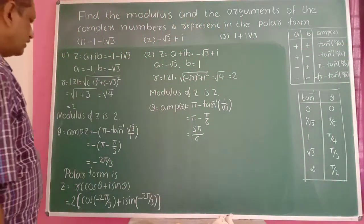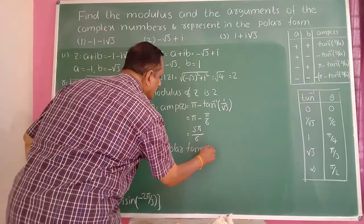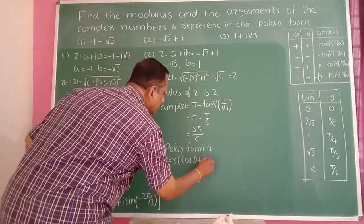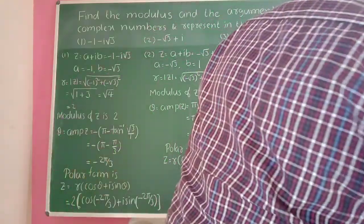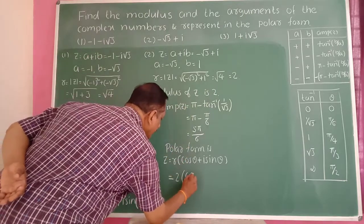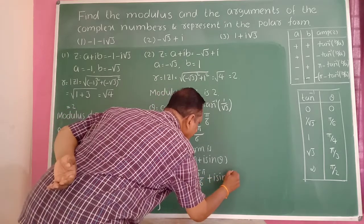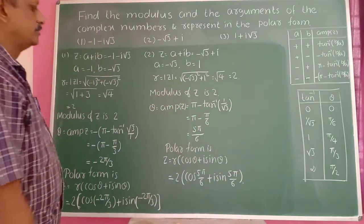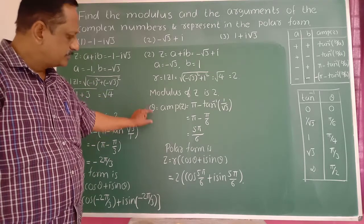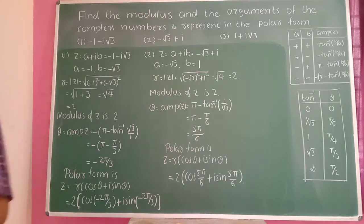So the amplitude is 5π/6. The polar form is z equals r·(cos θ + i·sin θ). Therefore z equals 2·(cos(5π/6) + i·sin(5π/6)). The modulus of z is 2, the amplitude is 5π/6, and the polar form is 2·(cos(5π/6) + i·sin(5π/6)).